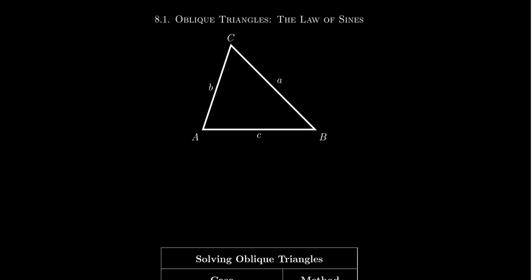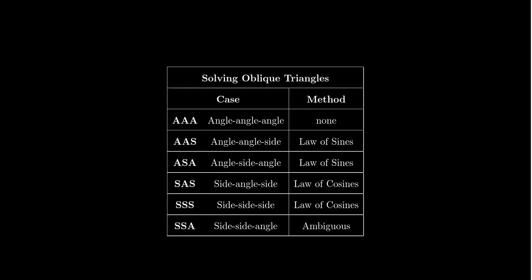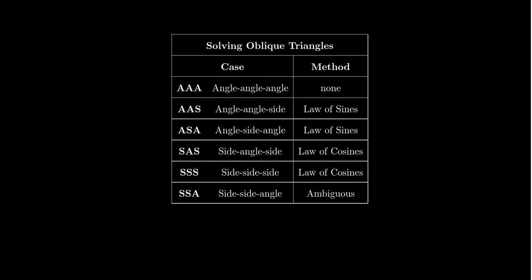When it comes to solving oblique triangles, you're always going to have some information about the triangle and then we have to solve for the remaining information. You need at least three bits of information in order to solve a triangle. If you have less than three — like if you only know two of the bits of information, whether that's two angles, two sides, or some combination — that's not enough to solve the triangle uniquely. So you need at least three, and in most cases you can then solve the remaining information.